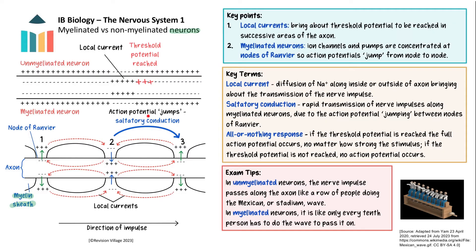Therefore, the action potential effectively jumps from node to node, increasing the speed at which it moves along the axon, a process known as saltatory conduction. You can think about the nerve impulse passing along the axon of an unmyelinated neuron a bit like a row of people doing a Mexican or stadium wave. The difference in myelinated neurons, however, is that instead of everybody having to do the Mexican wave, it is like only every tenth person has to do the wave to pass it on. It is important to note that if the threshold is reached, the same positive charge of depolarisation is reached. There are no strong or weak impulses. If the threshold potential is not reached, there is no action potential triggered. This is known as the all-or-nothing response.